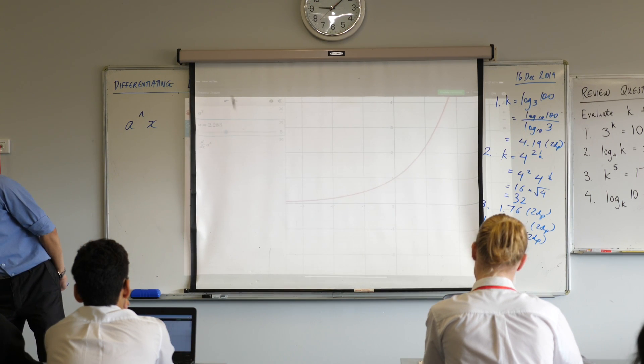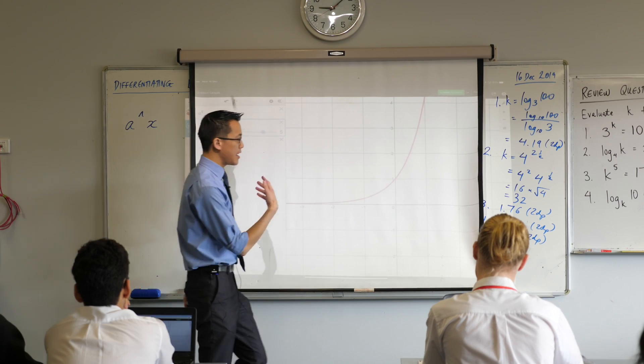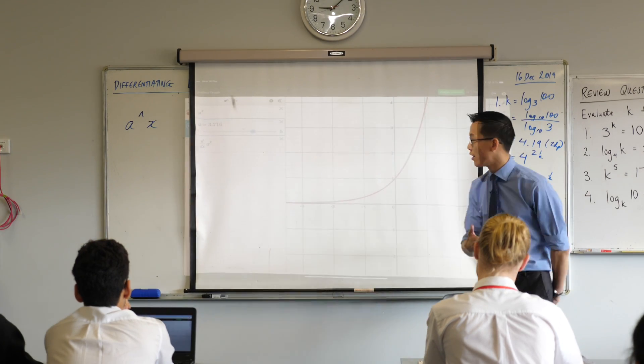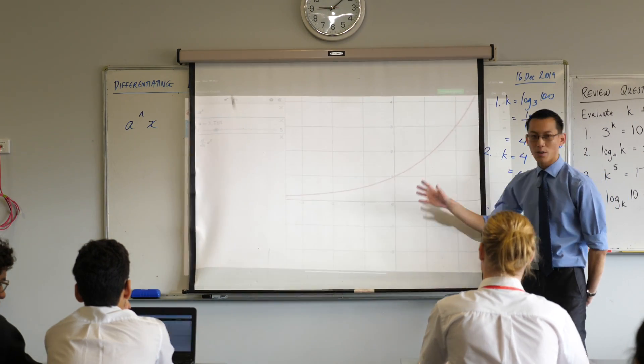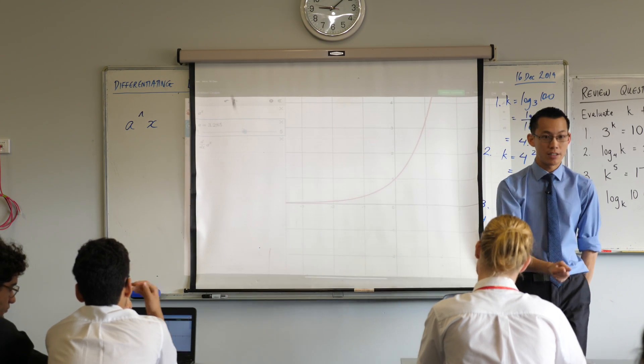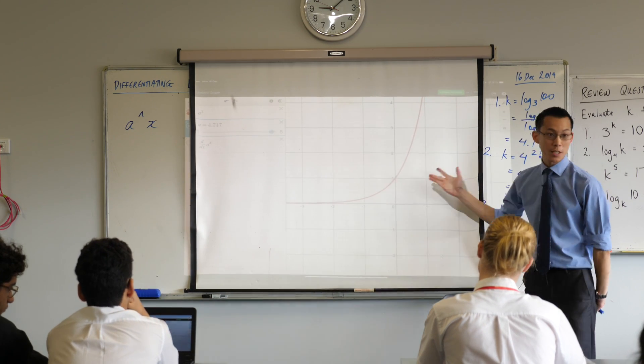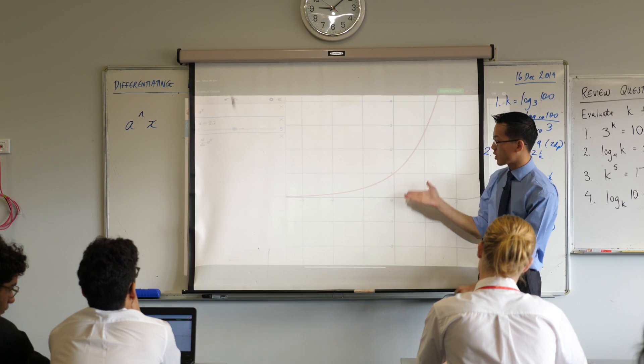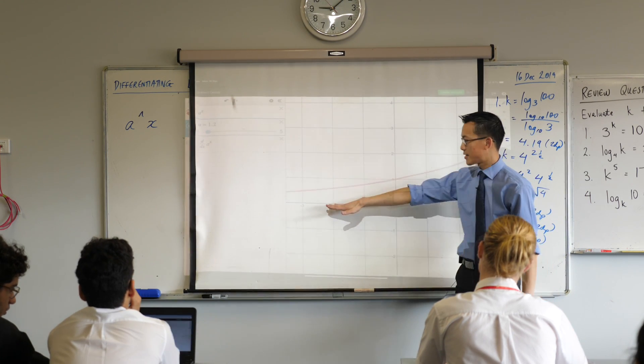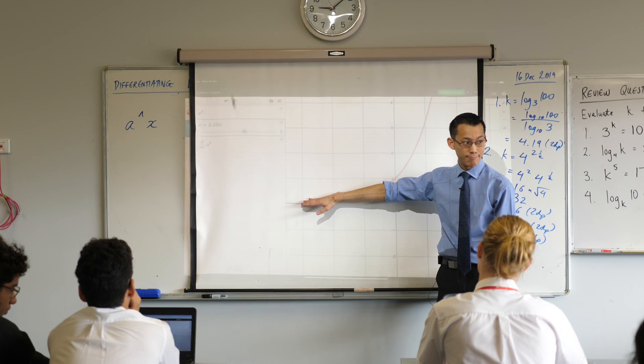I want you to remember, there we go, these are the exponential curves that we had a look at earlier, and we noticed something weird and interesting about the exponential curve and its gradient. Do you remember that?